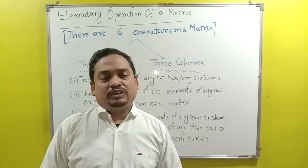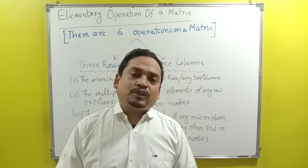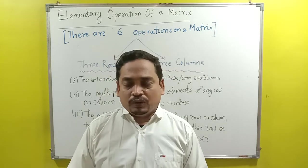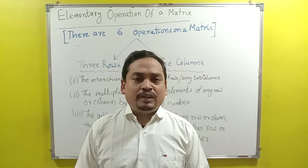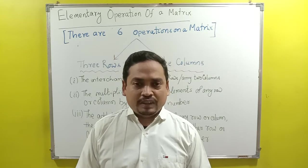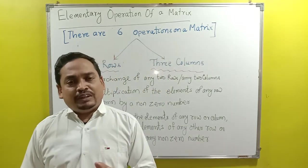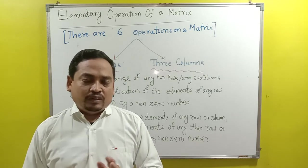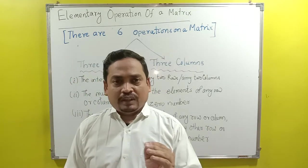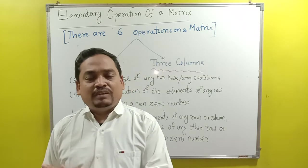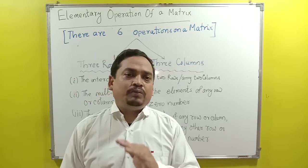Using this transformation, we have to find the inverse of a square matrix. Let us discuss the elementary operation on matrix. First, there are 6 elementary operations — 3 for rows and 3 for columns. Total 6 elementary operations.